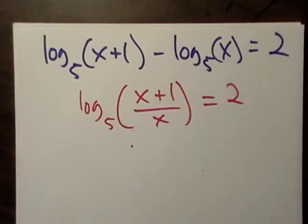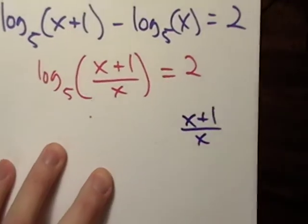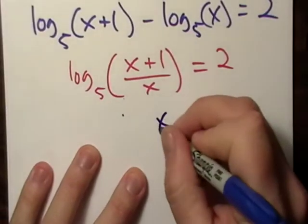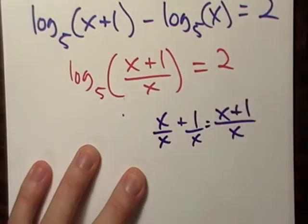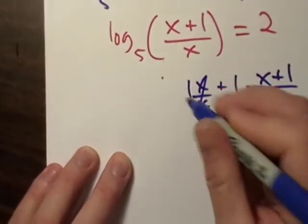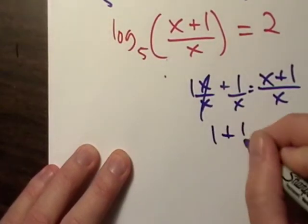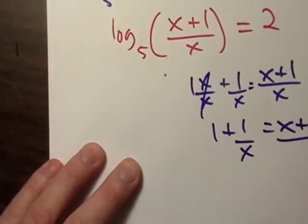Now, on a side note, you might have forgotten some of your algebra, but x plus 1 over x is the same thing as x over x plus 1 over x. They're equal to each other, and x over x is 1. So 1 plus 1 over x equals x plus 1 over x.